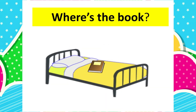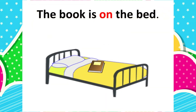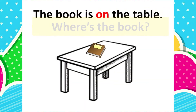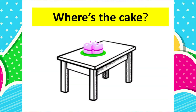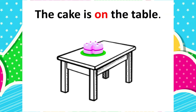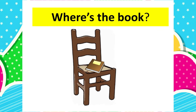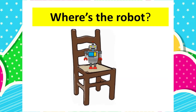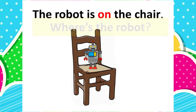Where's the book? The book is on the bed. Where's the book? The book is on the table. Where's the cake? The cake is on the table. Where's the ball? The book is on the chair. Where's the rowboat? The rowboat is on the chair.